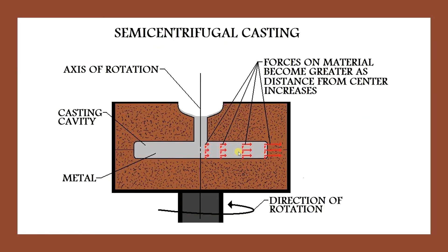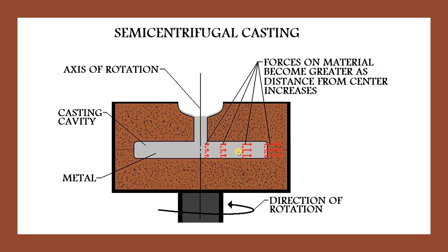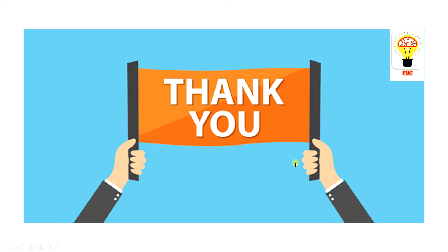Previously we saw horizontal centrifugal casting — now we can also go vertical. Yes, vertical is possible. The main restriction is that only axis-symmetric components can be made; asymmetric components cannot. Whether hollow or thin section, anything axis-symmetric can be done. You can see it rotating vertically here, with a pattern mold used in casting and axial rotation directing forces outward.